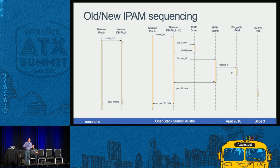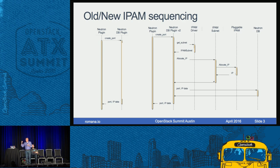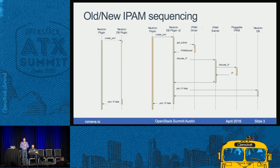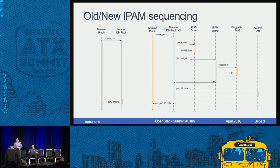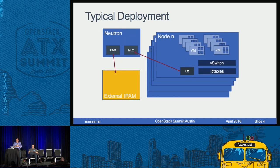The pluggable IPAM module in that sequence is the code my team wrote — a Python module that gets plugged into Neutron. Once that driver is called, it makes an external request to a third-party IPAM system. It responds and rolls back up, ultimately returning the port and IP address to the Neutron plugin. Quite a bit more complicated, quite a bit more engineering and testing, and it was first released in the Neutron Liberty cycle.